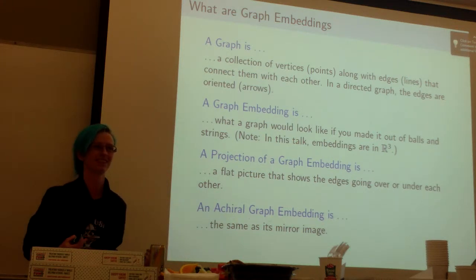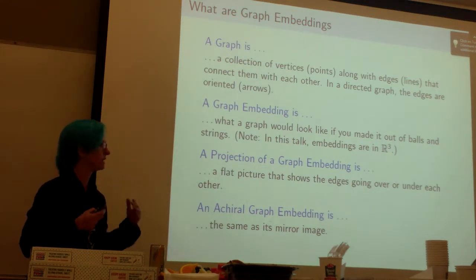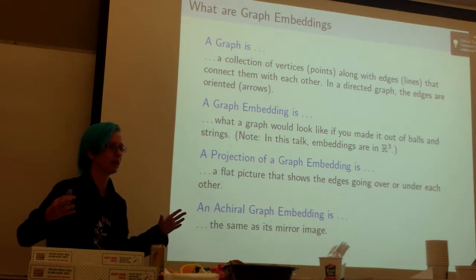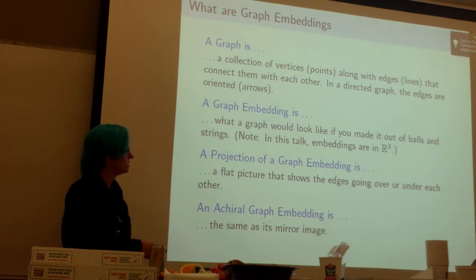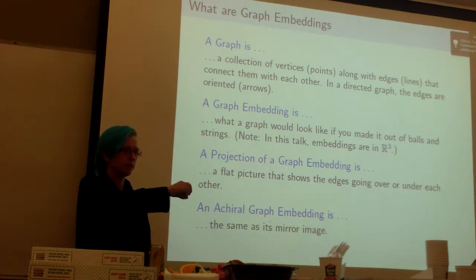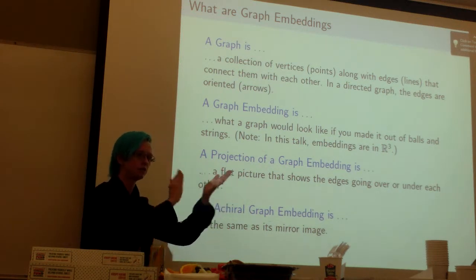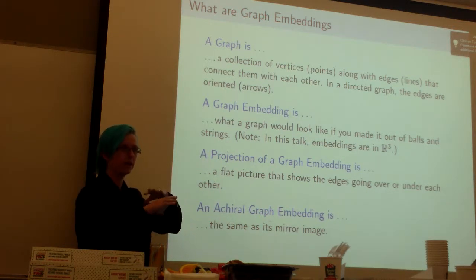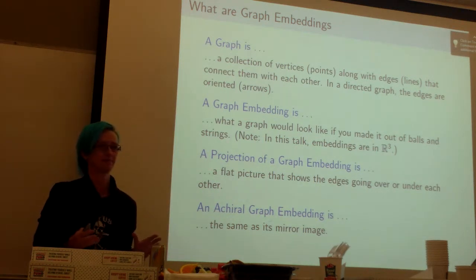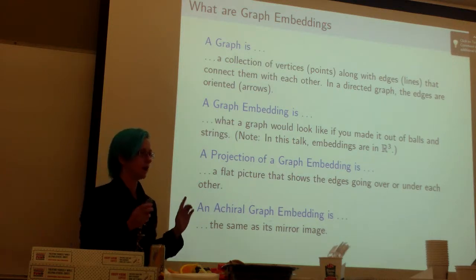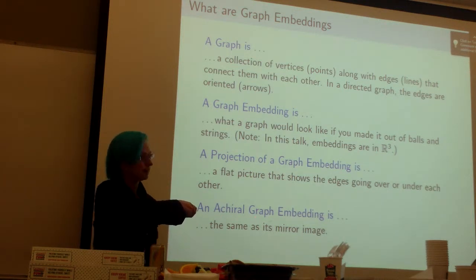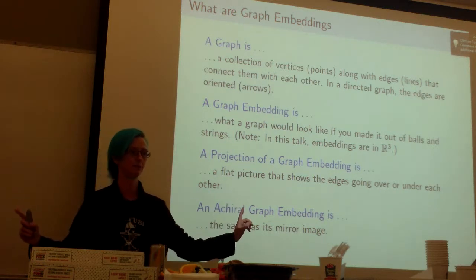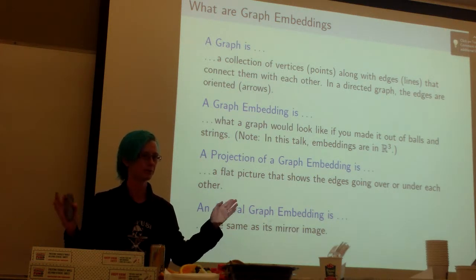That means that any one graph, there are an infinite number of ways that you can embed it because those lines can be all tangled up with each other. It's really hard to work on a 3D object, so what we do is take projections of them, which is a two-dimensional picture. It's flat but you can still see which lines are going over or under each other. I want to mention this for later when we come to achiral stuff - that just means it's the same as its mirror image.